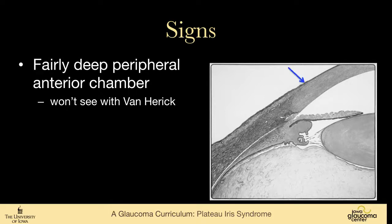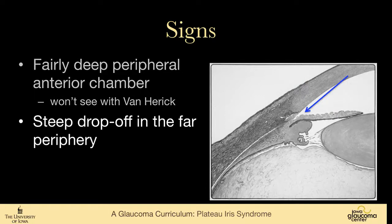With the Van Herrick, we're bringing this light in where it first meets the sclerocornea. You can see how the cornea tucks into the sclera here. And at that point, the chamber is fairly normally deep. But there's this very steep drop-off in the far periphery, as you can see here, that's characteristic of plateau iris.